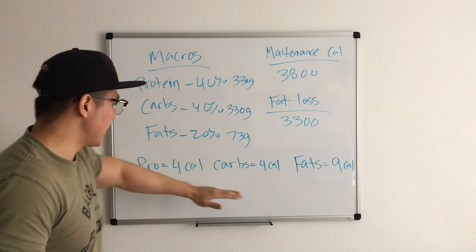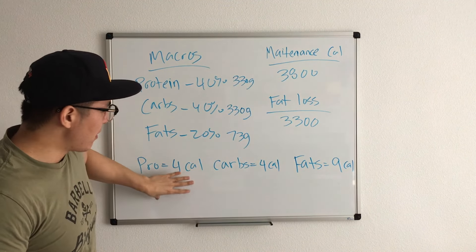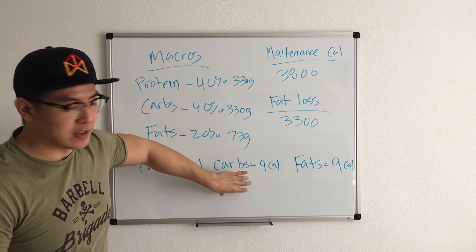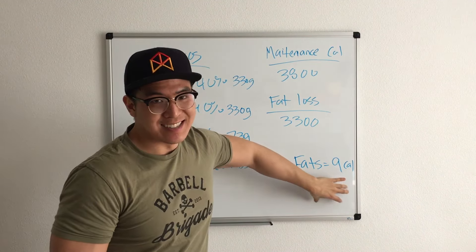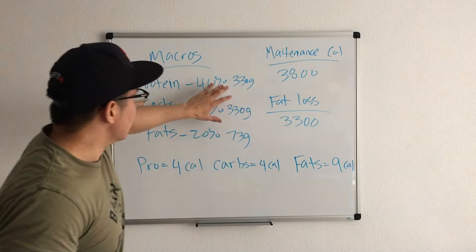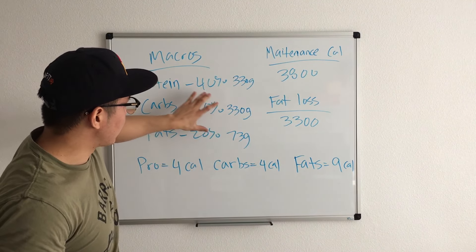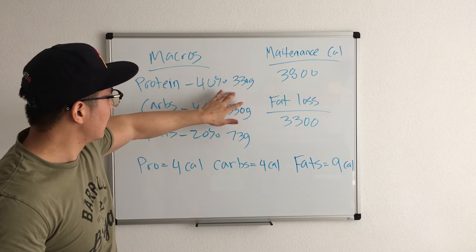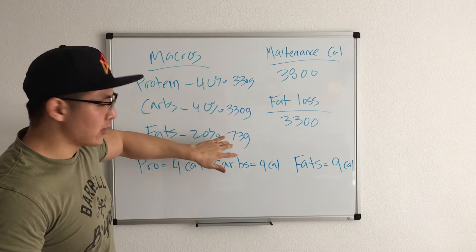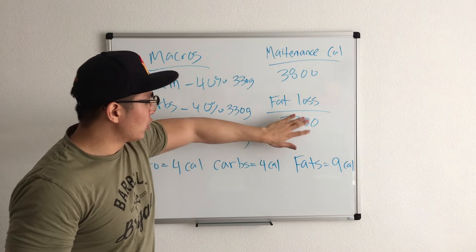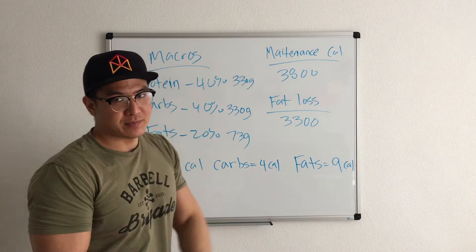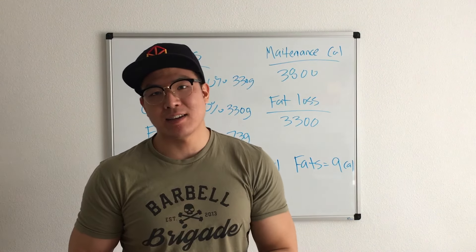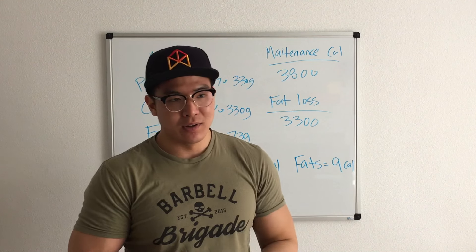One gram of protein is four calories, one gram of carbs is four calories, one gram of fat is nine calories. You total these numbers I have right here, so you break in the 40-40-20 split, which should equal 330 protein, 330 carbs, 73 grams of fat, which equals total 3,300. I know it gets a little confusing, but once you start practicing it, it'll be very simple.